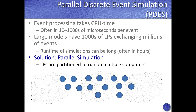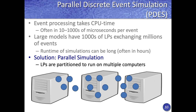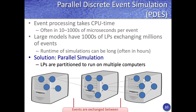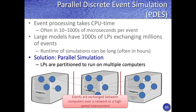In a parallel simulation, multiple computers are used and the model is partitioned across these computers to accelerate the simulation. Interactions between compute nodes are performed on high-speed networks or specialized interconnects to make the parallel simulation run fast.